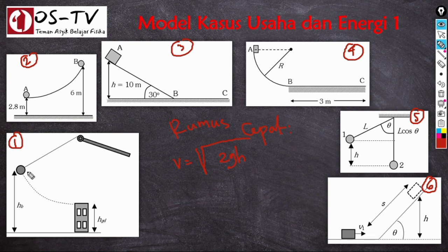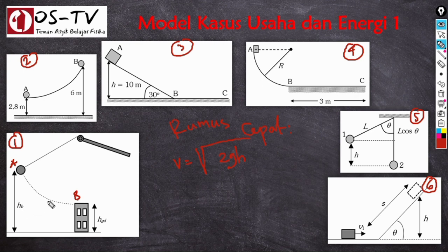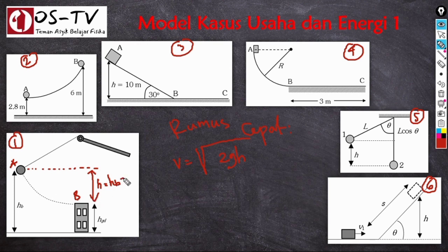Coba kita tinjau permasalahan pertama dan terapkan rumus cepat ini. Misalnya benda mengayun dari posisi A ke B, di mana B adalah puncak gedung dengan ketinggian H_GD, sementara ketinggian benda mula-mula adalah H_B. Maka H yang digunakan dalam rumus adalah H_B dikurangi H_GD. Untuk kasus nomor 2, perbedaan ketinggian antara titik A dan B juga dapat ditentukan sebagai H, yaitu H_B dikurangi H_A.